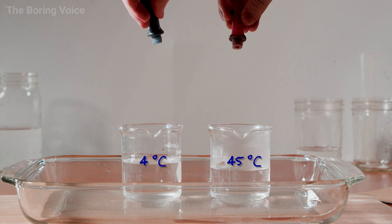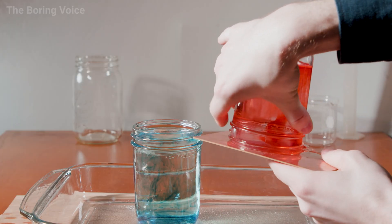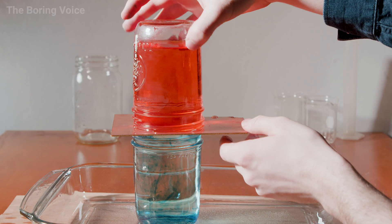I've added color for visual reference in these two jars. I carefully flip over and place the hot water on top of the cold water jar, and then remove the divider.